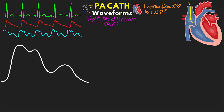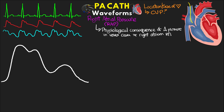A waveform is just a graphical representation of measured pressures over time — as the pressure goes up, the waveform goes up, and as the pressure goes down, we see the waveform go down. This pressure, specifically with our right atrial pressure, is going to be the physiological consequence of changes in pressure in either the vena cava or the right atrium in relation to their compliance as well as the volume of blood. With this waveform you're going to notice that we have three waves and two descents.